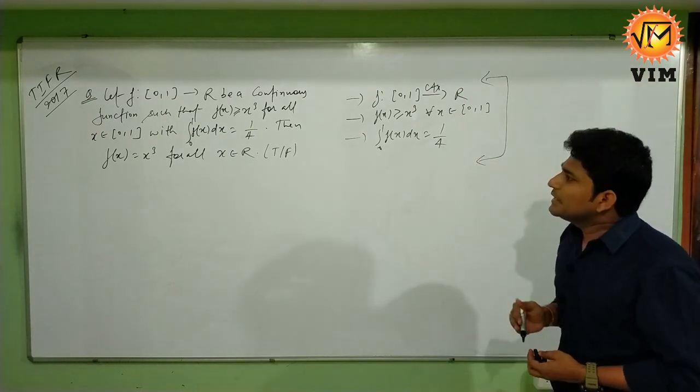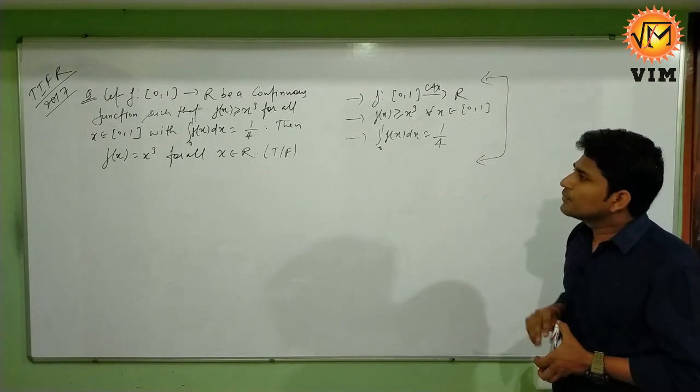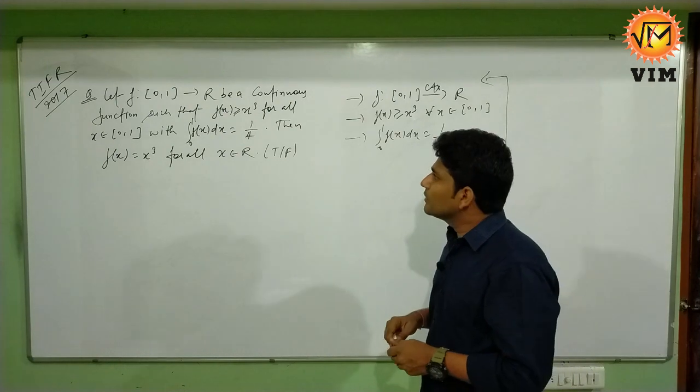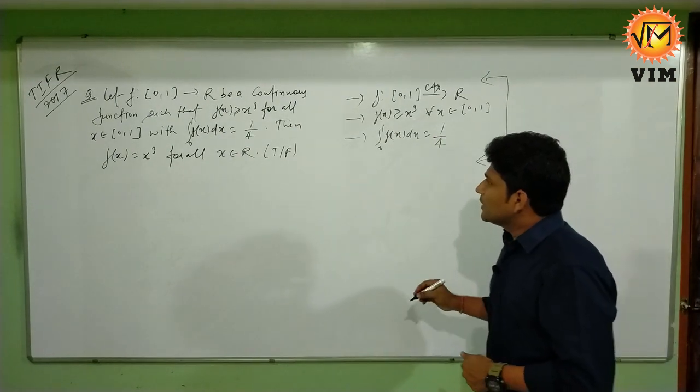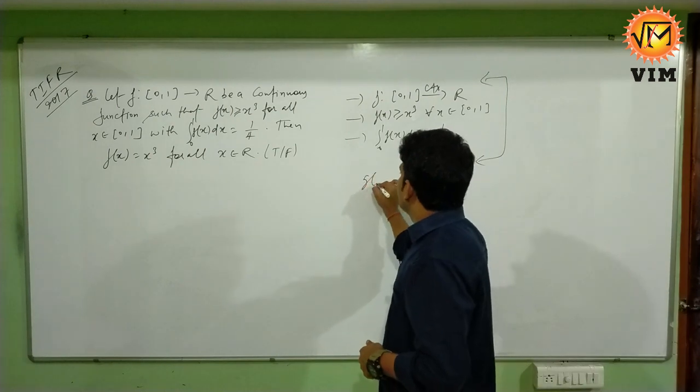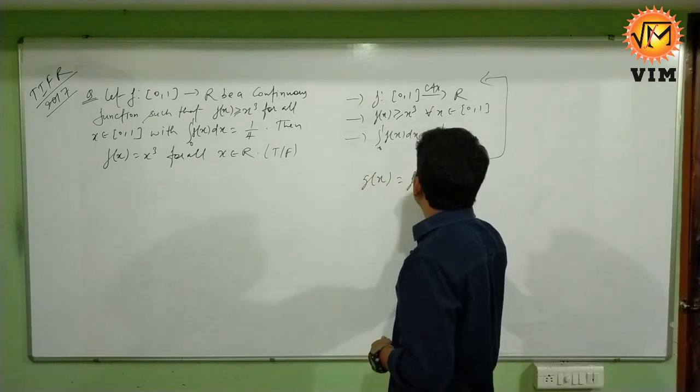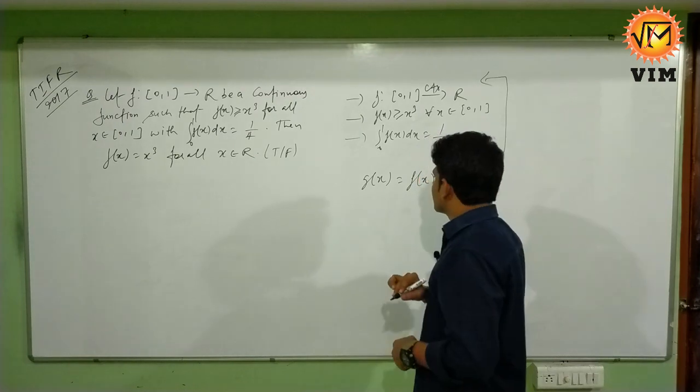If a function having these three properties satisfies f(x) = x³ for all x ∈ R, then this statement is true, otherwise false. So let's assume a function g(x) = f(x) - x³.